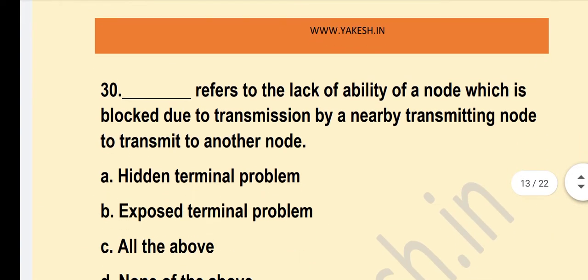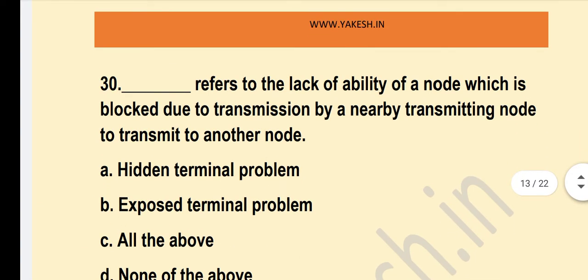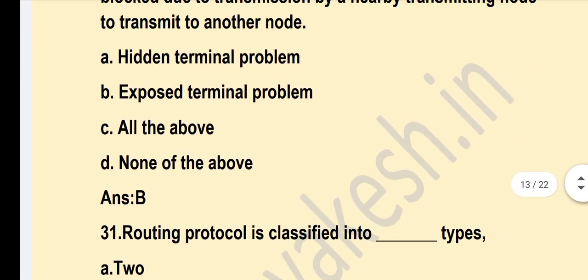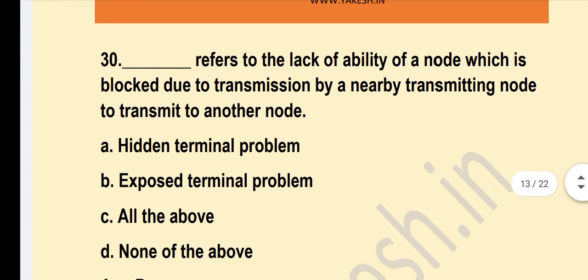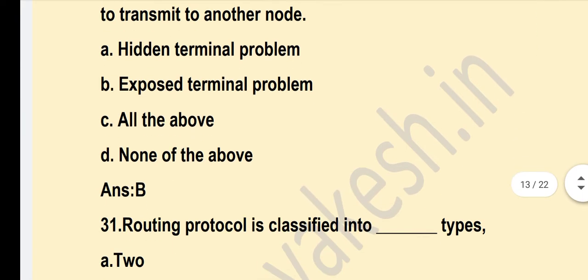The blank refers to the lack of ability of a node which is blocked due to transmission by a nearby transmitting node to transmit to another node. Option B — Exposed Terminal Problem — is the correct answer.